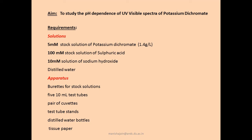For this experiment you will require: a 5 millimolar stock solution of potassium dichromate, a 100 millimolar stock solution of sulfuric acid, a 10 millimolar solution of sodium hydroxide, and distilled water. For apparatus: burettes for exact measurements, 10 ml test tubes to prepare five sample solutions, a pair of cuvettes to record the spectra, test tube stands, distilled water bottles, and tissue papers.